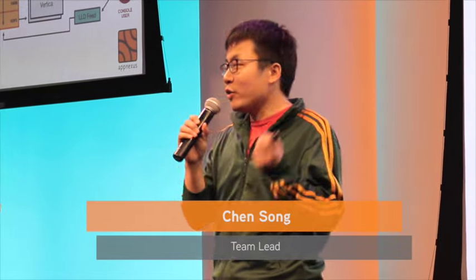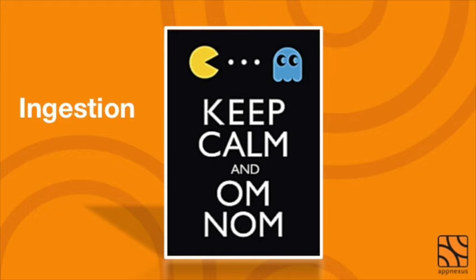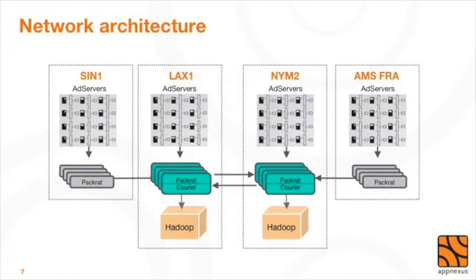My name is Chen, and today I'm going to talk about data ingestion and data processing. First, let me give an overview of our network architecture. Globally, we have five data centers: Singapore in Asia, LAX and New York in the US, and Amsterdam and Frankfurt in Europe. Each data center has an ad serving infrastructure that runs real-time ad auctions. In total, we have over 1,000 ad serving machines, which collectively produce over 2 million log events per second.